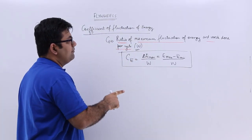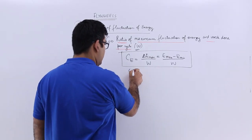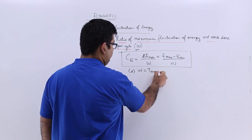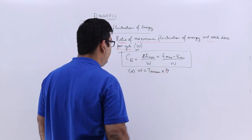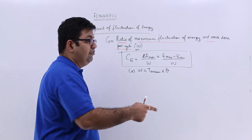Now work done per cycle can be found out by two methods. The first method is this: that work done per cycle is equal to mean torque into theta, that is the angle turned by the crankshaft in one cycle.